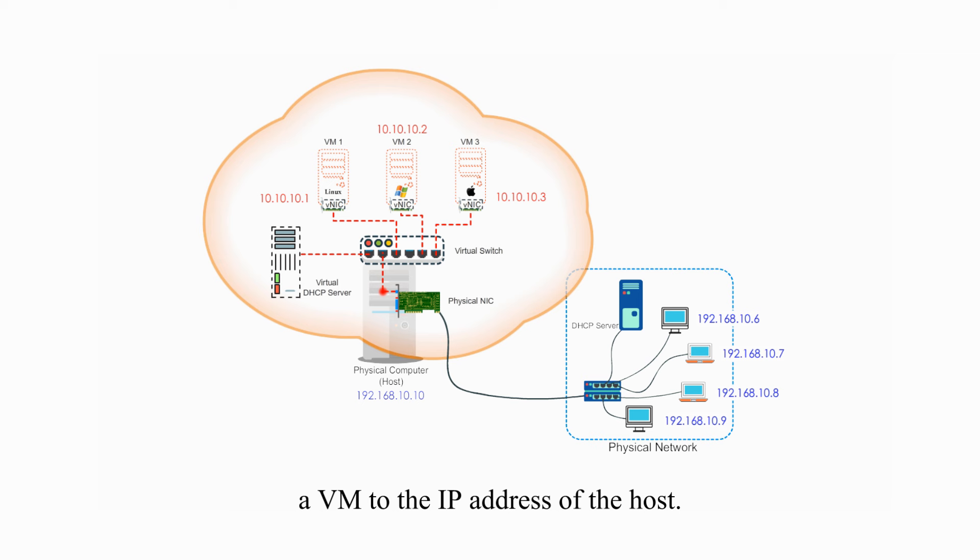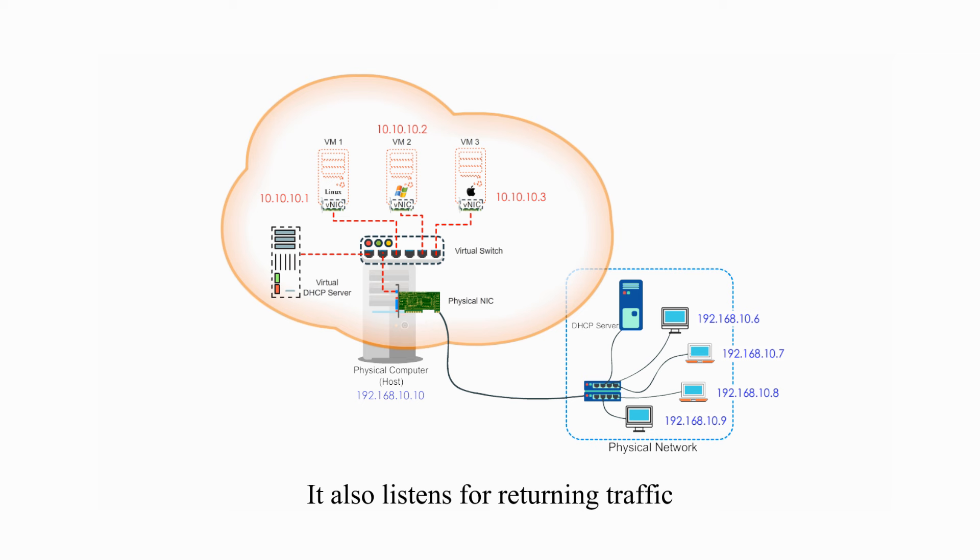The host is sitting between these two networks and translates the IP address from a virtual machine to the IP address of the host. It also listens for returning traffic, so that it can deliver it to the virtual machine. The external physical network sees traffic from the virtual machine as if it comes from the host itself.